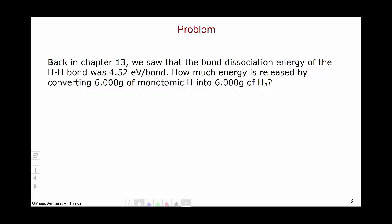Back in Chapter 13, we saw that the bond dissociation energy of the hydrogen-hydrogen bond was 4.52 electron volts per bond. How much energy is released, therefore, by converting 6 grams of monatomic hydrogen into 6 grams of diatomic hydrogen, H2?